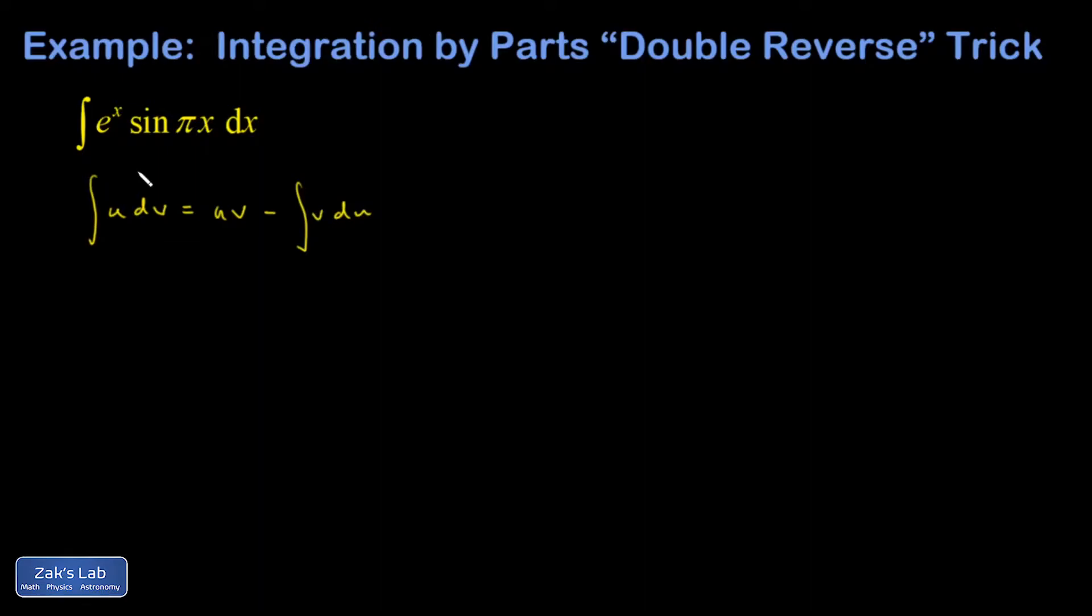What your hope is, is that you can choose one function, U, that gets simpler when you differentiate it. And that you're able to guess the antiderivative or integrate V to fill in this piece and this piece. So we want that DU to be simpler than the U it came from. That's really the key to making the choice.